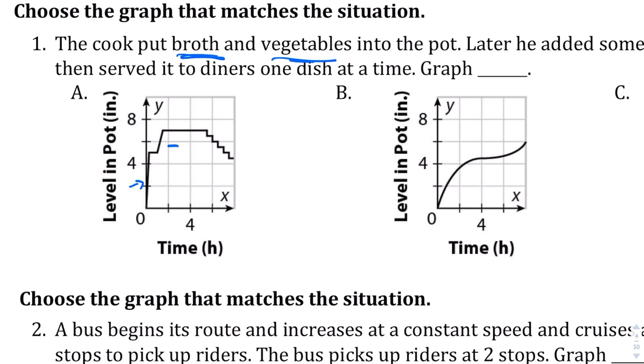And then here is where we add the meat. And then here, this makes sense. He's serving it to diners one at a time. Therefore, the level in the pot is going down a certain amount each time, like a step almost, because it's bowls here.